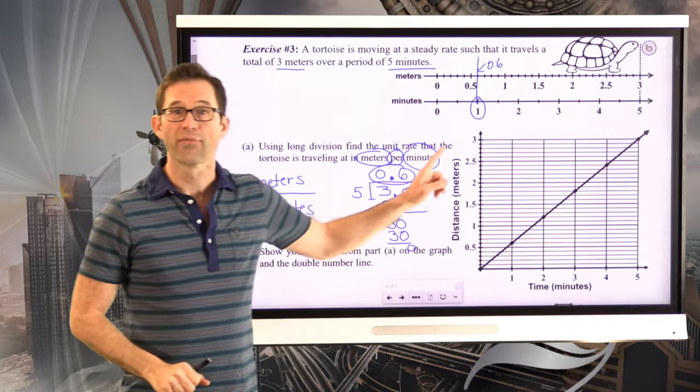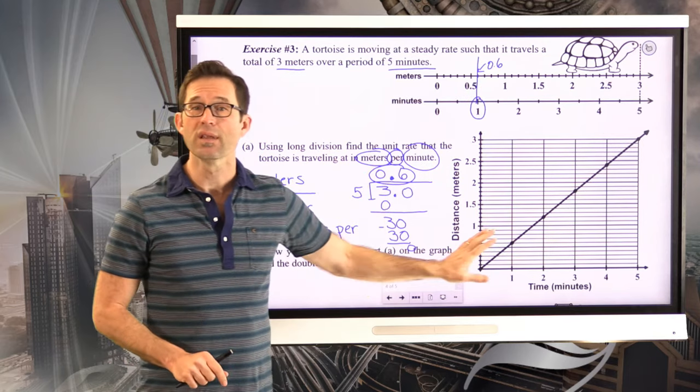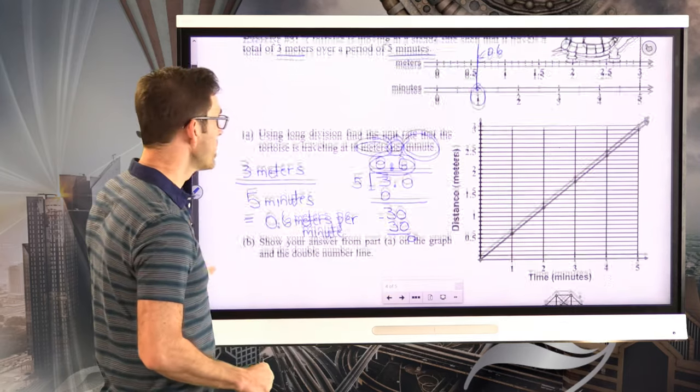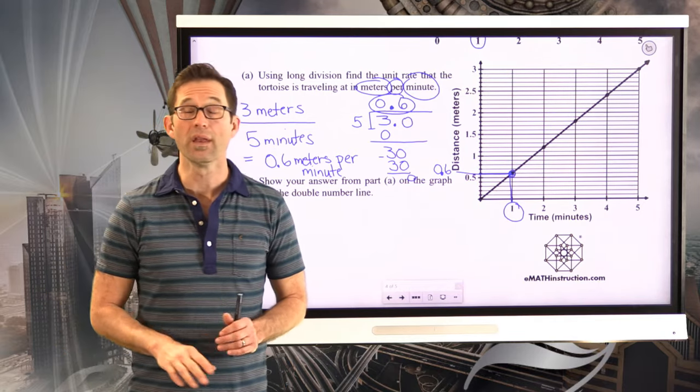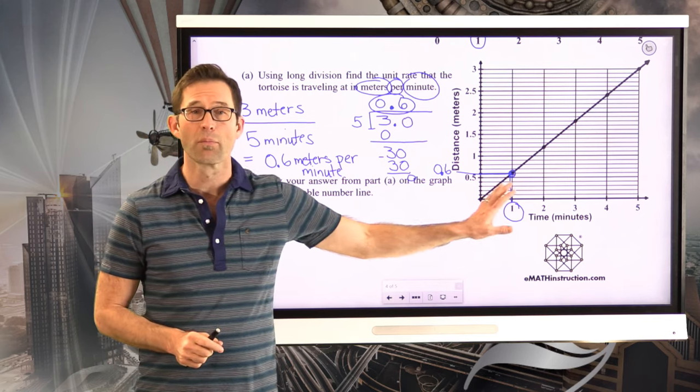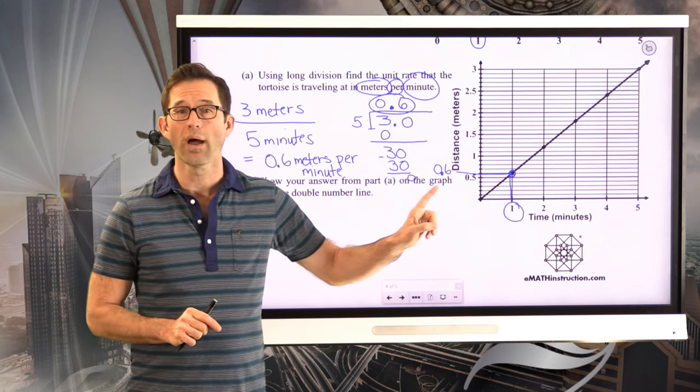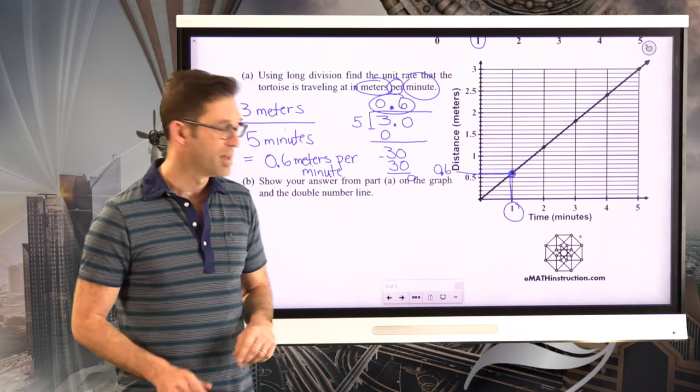In other words, after one minute, the turtle has traveled 0.6 meters. Likewise, down on this graph, we can see it by going to one minute here, simply going up to the graph. Here's my point. Come over here, and it's also at 0.6. So we really want to harp on that idea that if you want to visualize or you want to see the unit rate on the graph of a proportional relationship, you can always see it as the y value when the x value is equal to one.